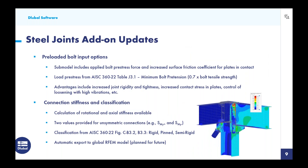Moving on to updates implemented in the Steel Joints add-on over the last year: the first is the preloaded bolt input option, where the submodel automatically includes the applied bolt pre-stress force and an increased surface friction coefficient for plates in contact. The load pre-stress within that submodel comes from AISC Table J3.1, referencing the 0.7 factor times the bolt tensile strength. The advantages of a preloaded or slip-critical connection include increased joint rigidity and tightness, increased contact stress in the plates before additional loads are applied, and better control of loosening in high-vibration environments.